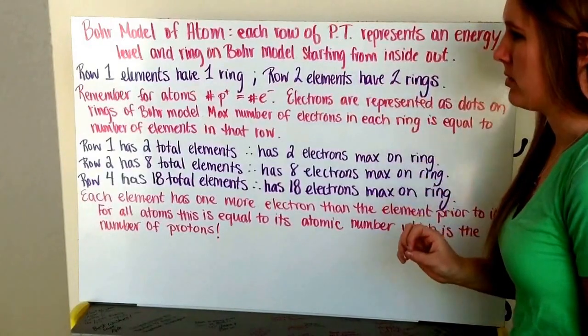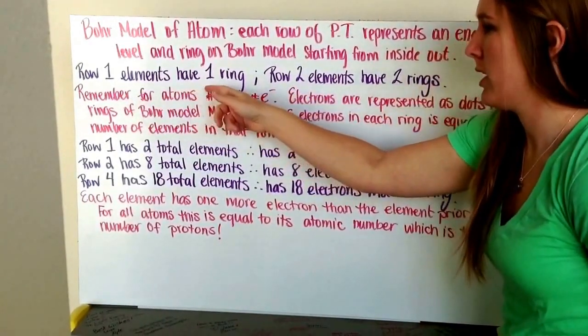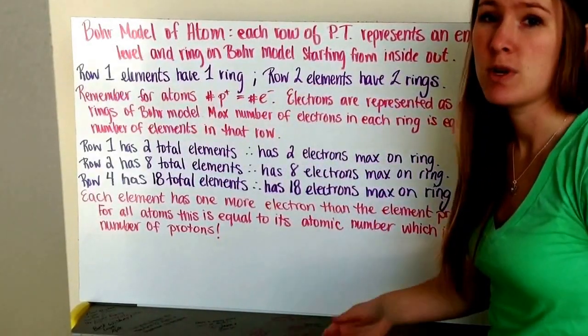Starting from the inside out, any elements in row one have one ring, row two elements have two rings, row three have three, four have four, etc.